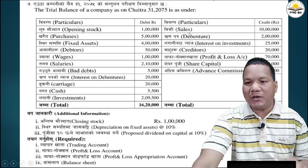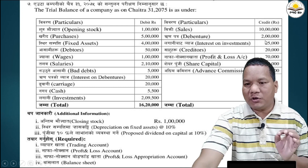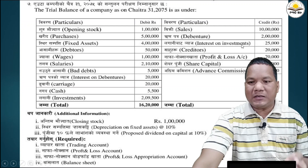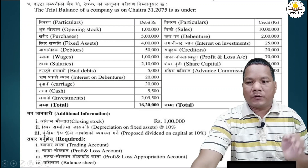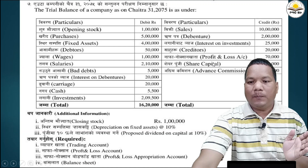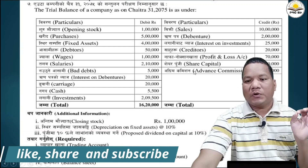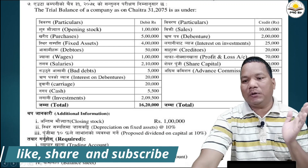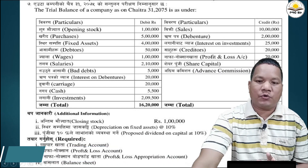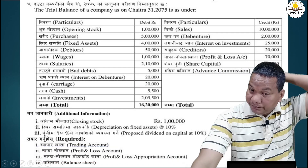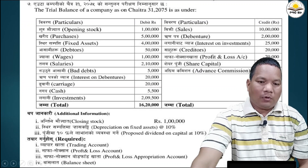On the credit side of the trial balance: sales 10 lakh, debentures 2 lakh, interest on investment 25,000, creditors 20,000, profit and loss account 70,000, share capital 3 lakh, advance commission 5,000. This is the complete trial balance given.